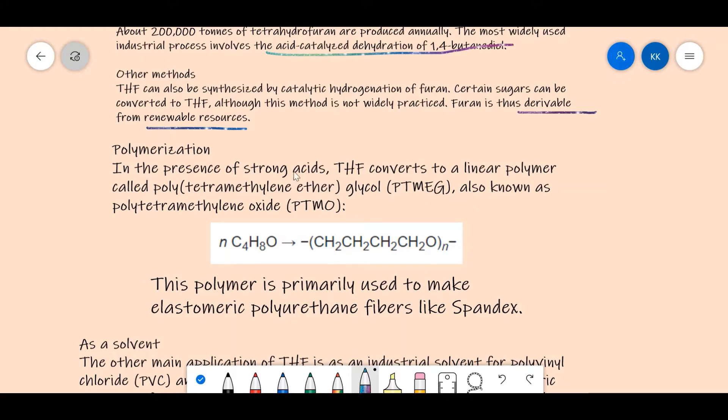There, n is used to say that there are a very high number of molecules, and they polymerize together to give us this linear chain. The polymer is primarily used to make elastomeric polyurethane fibers like spandex. These are very commonly used, and hence we have also heard the name of spandex.